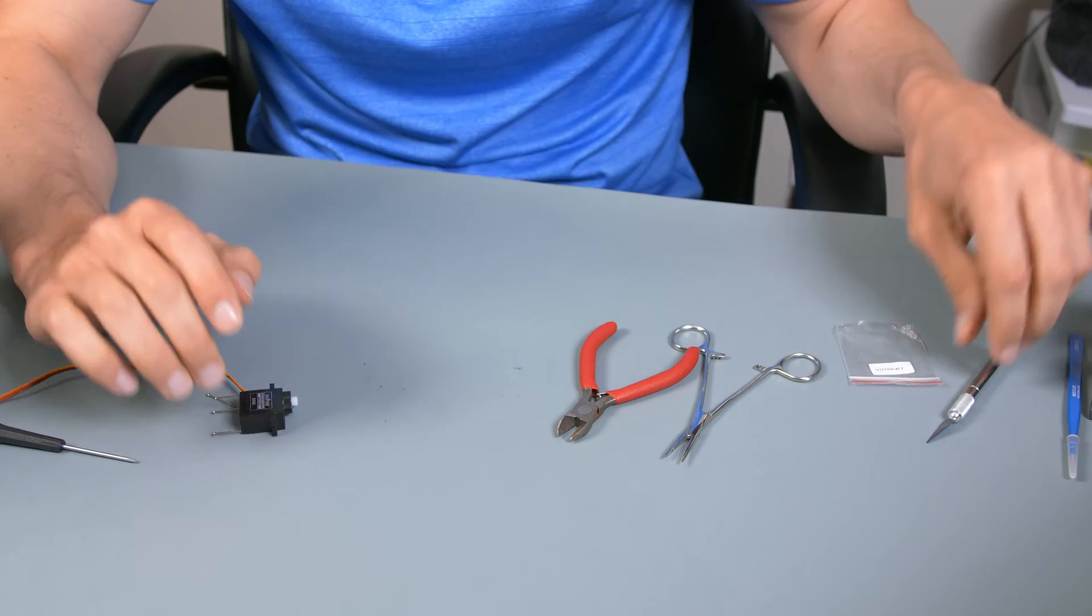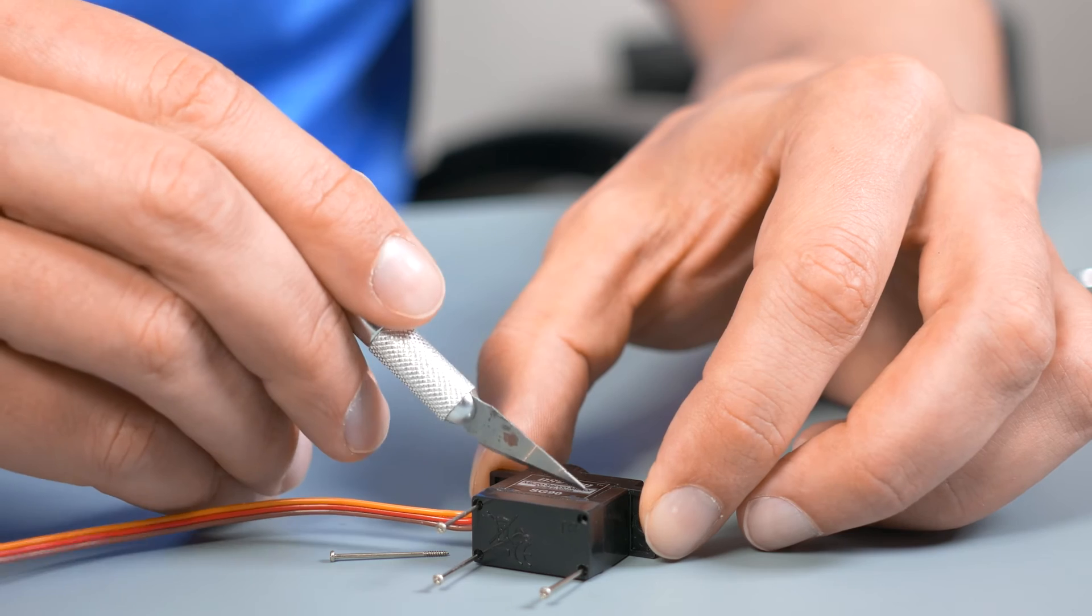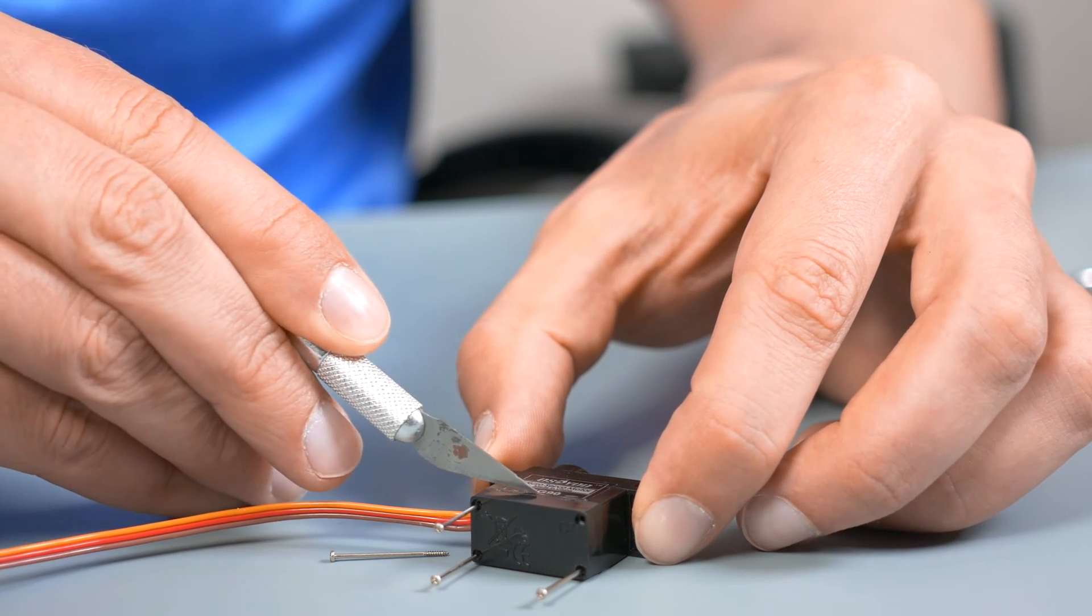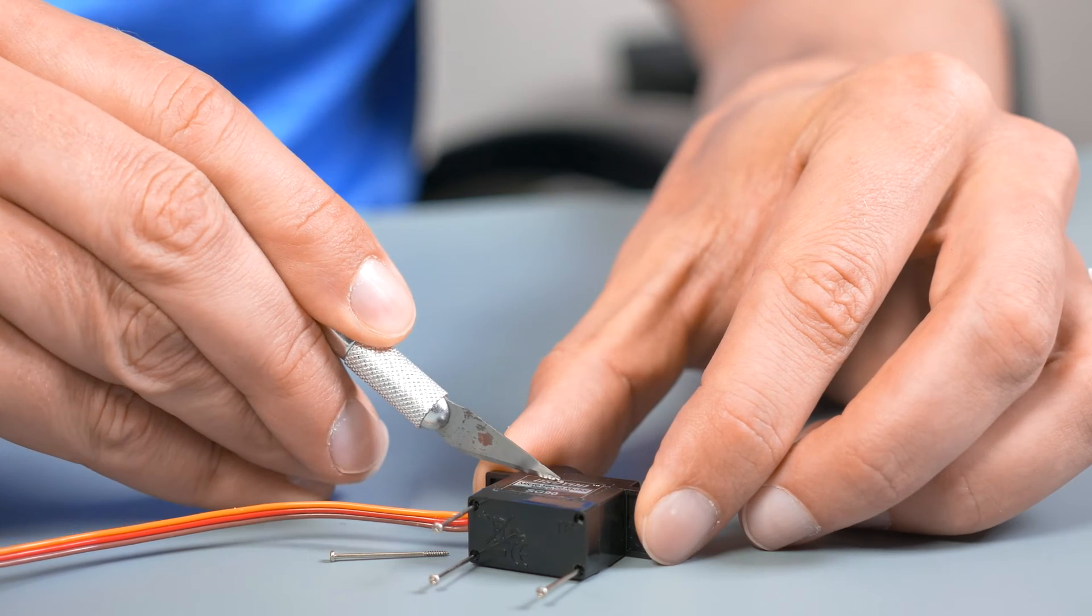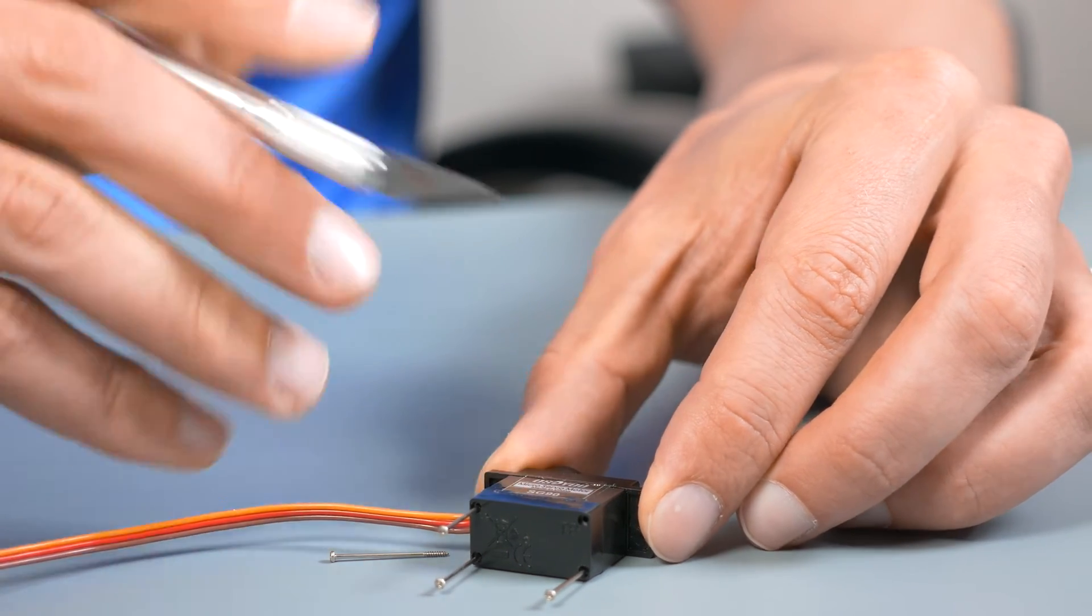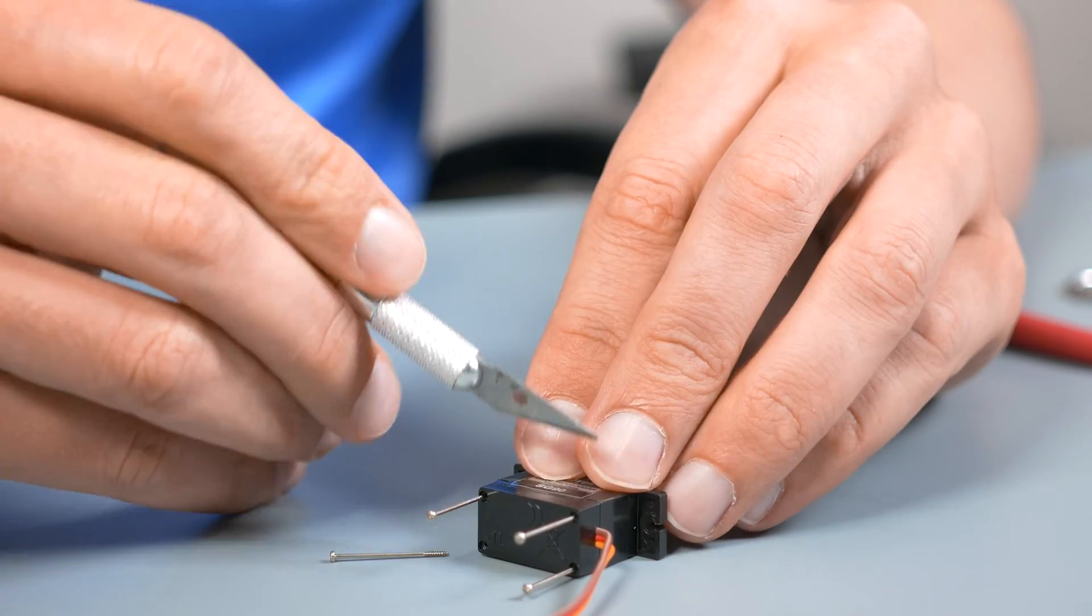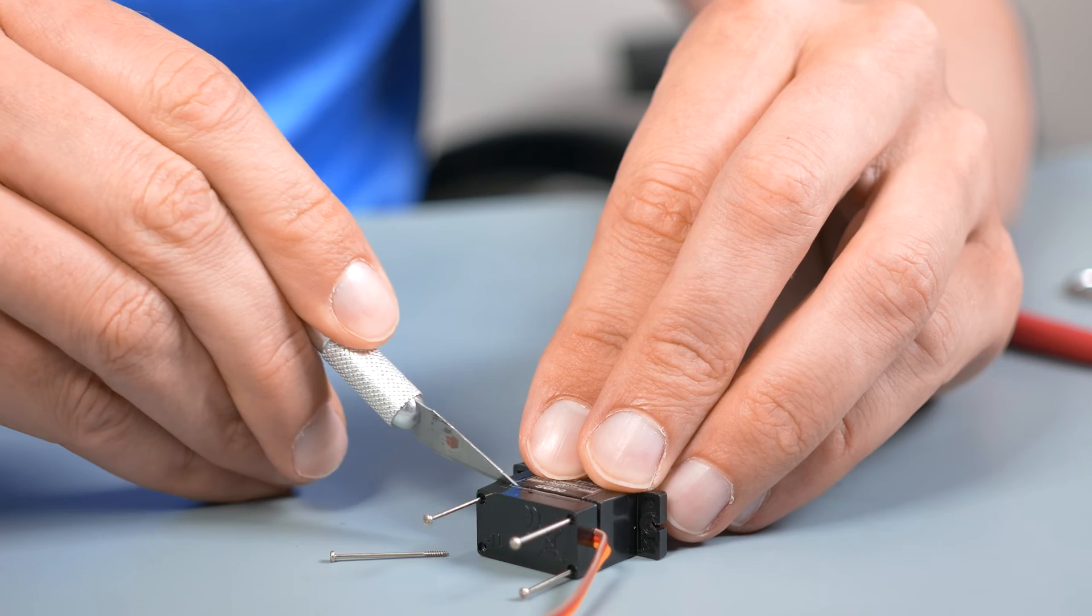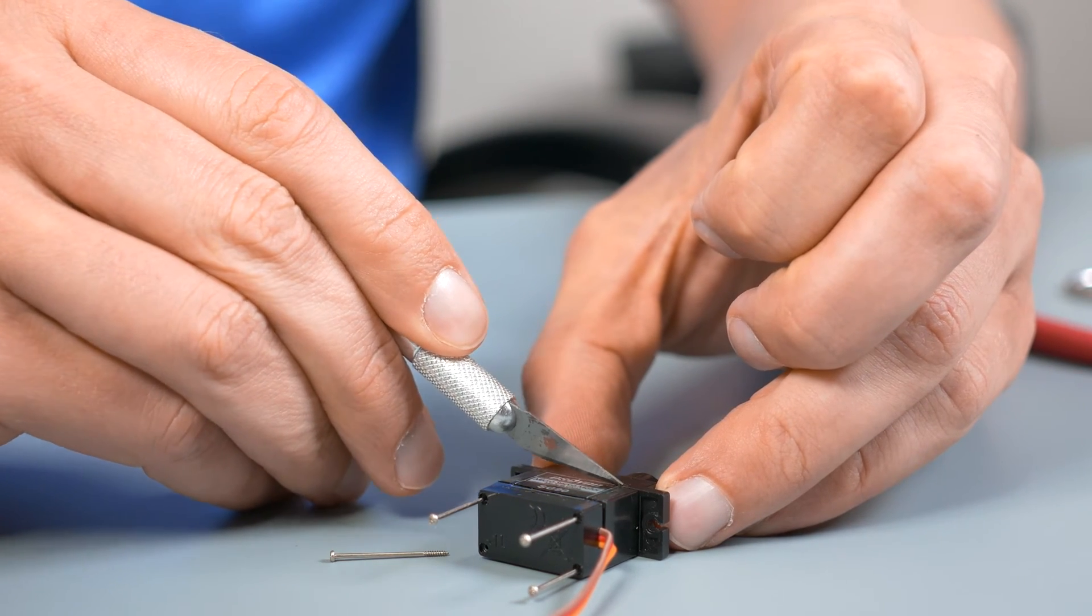So now that those are loose, let's grab an exacto knife. This isn't actually completely necessary, but even if it's not completely necessary, it's kind of nice to just cut this right here. For me it's twofold: one, it makes it so this comes apart a little bit easier and you don't have to worry about other issues. And then two, that's a quick way for me to know which of my servos I've converted and which ones I haven't, even though I guess you could just write on it a big C or something with a Sharpie, whatever.